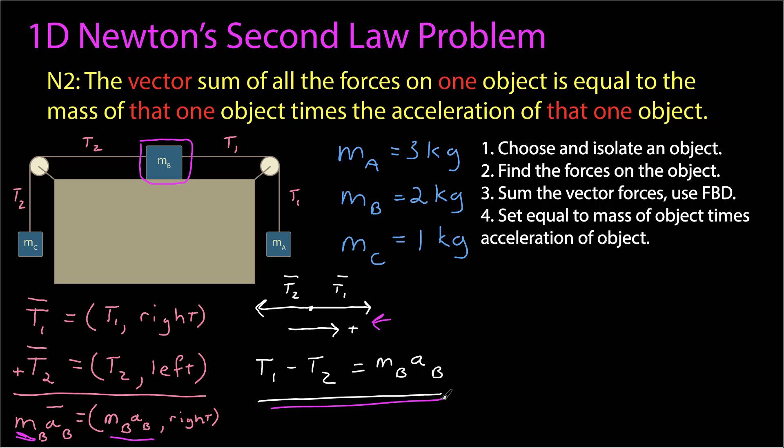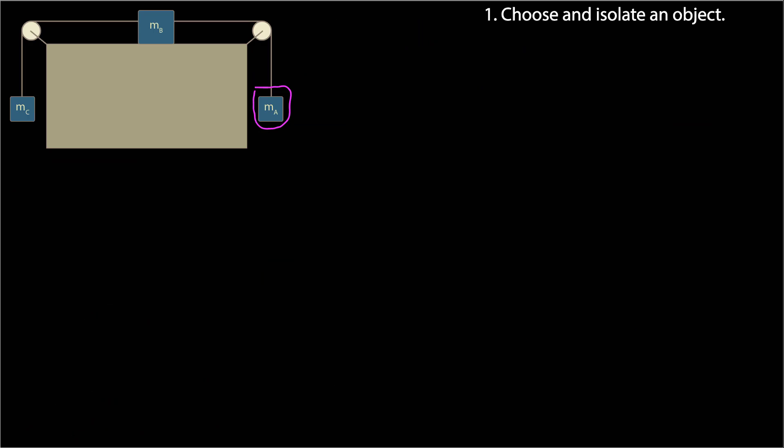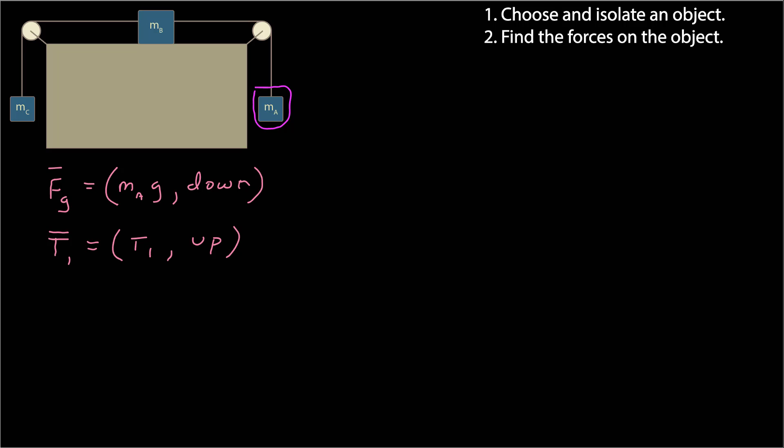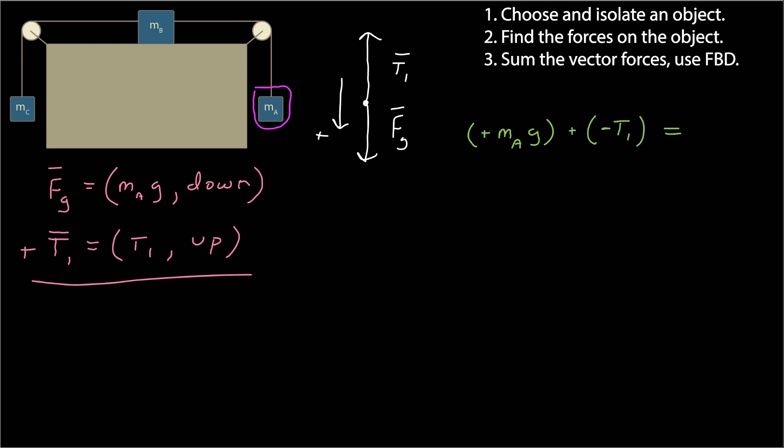Am I done? No — I want to find the acceleration but I don't know either tension, only the masses. So I have to look at other objects. I'll choose mass a and isolate it. The forces on mass a are: a tension force from wire 1 directed upward, and the force due to gravity acting downward with magnitude mass a times g.